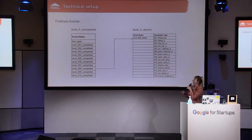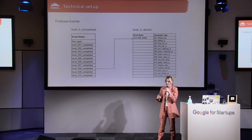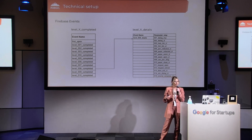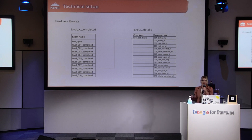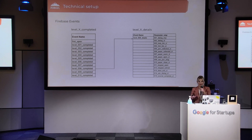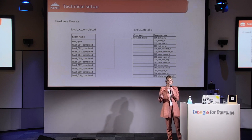First, technical setup. When we are preparing the game before launch, we set up all events for data tracking. From the gameplay perspective, I will mention two today: the first is level completed and the second is level details, which we use to divide each level into steps. For detail events and naming, as you can see on the right side, we use different parameter values to record each step from the beginning of the level to the last click in that level. Both events serve to detect critical dropouts, either between levels or inside a particular level.